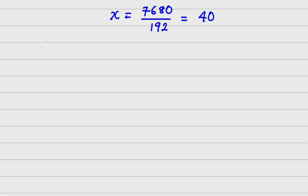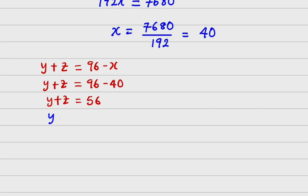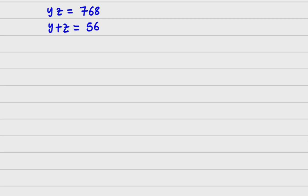Recall that y plus z equals 96 minus x, so y plus z equals 96 minus 40, which is 56. We now have two equations: y plus z equals 56, and yz equals 768. From the first, y equals 56 minus z. We substitute this into the product equation.